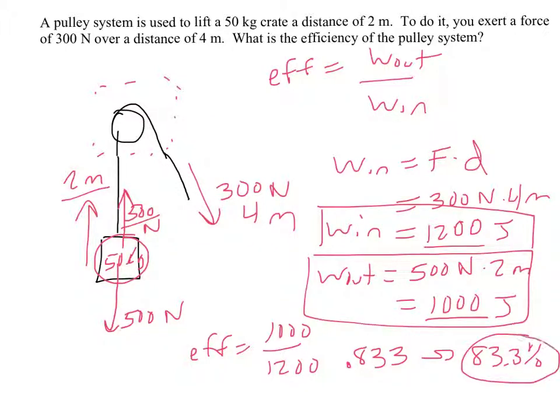Hopefully in your head, before you actually even did this, this seems reasonable. 1,000 out of 1,200, it's a pretty high percentage, but it's not all the way to 100, and that seems like a reasonable answer. It's always a good way to check that.